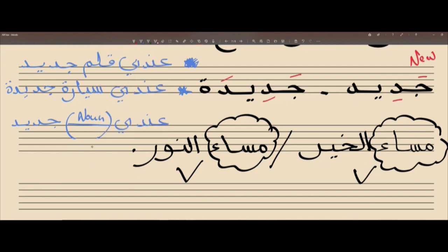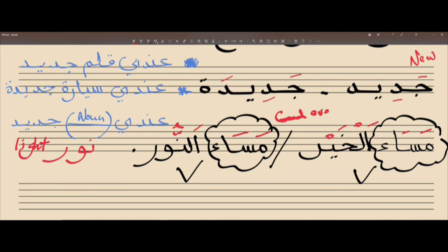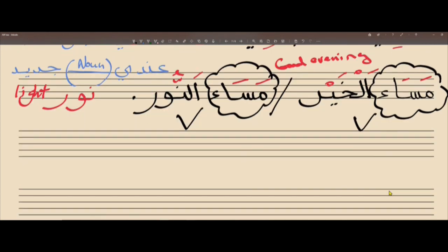نور means light, and this is also a name. So مساء الخير - مساء النور, and both of them mean good evening. It's hard to switch from two languages when you're writing them together. The other word we have - can someone help me read the next word on the list?